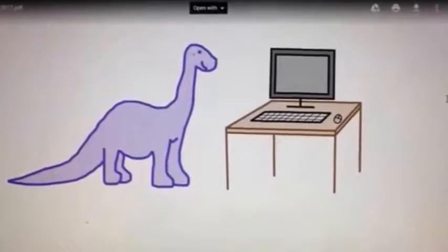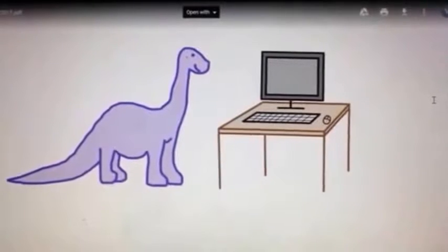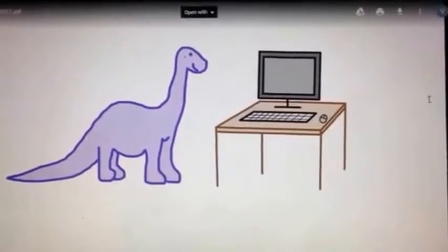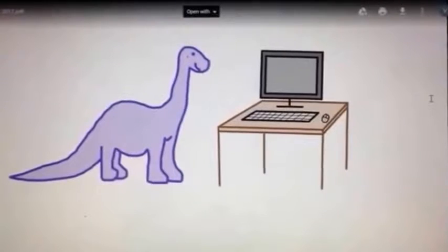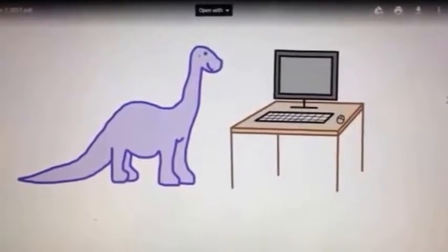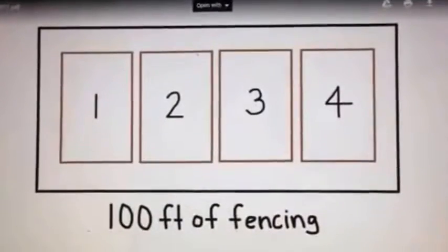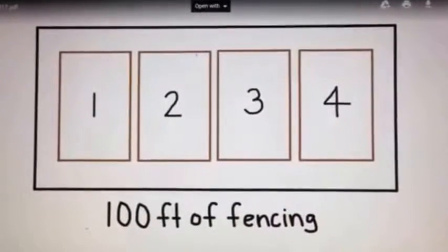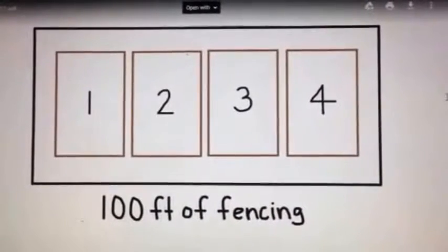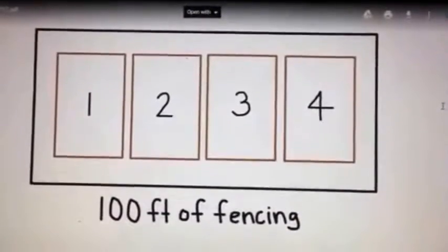Daisy went onto her computer and looked at what the average garden size was. She found that the average garden is about 600 square feet with side lengths of 20 feet and 30 feet, making the perimeter 100 feet. So Daisy decided to use the same perimeter of 100 feet but maximize the area within the garden.